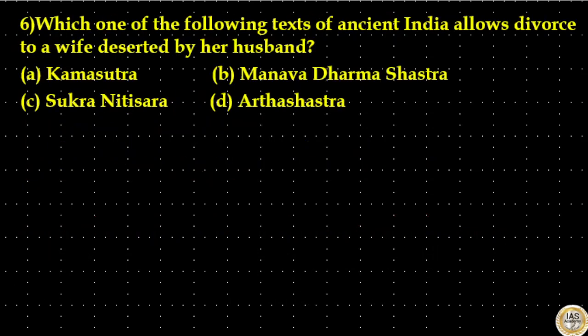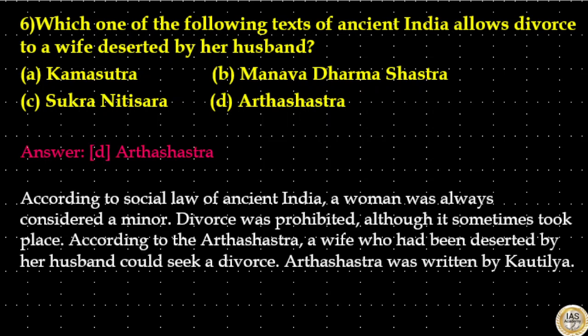Which one of the following texts of ancient India allows divorce to a wife deserted by her husband? Option A: Kama Sutra. Option B: Manusmriti (Manav Dharma Shastra). Option C: Shukraniti. Option D: Arthashastra. The answer is option D: Arthashastra. According to the social law of ancient India, a woman was always considered a minor and divorce was prohibited, although it sometimes took place. According to the Arthashastra, a wife who had been deserted by her husband could seek a divorce. The Arthashastra was written by Kautilya.